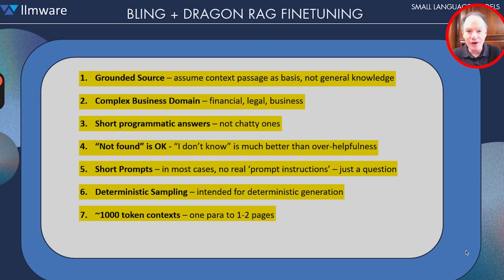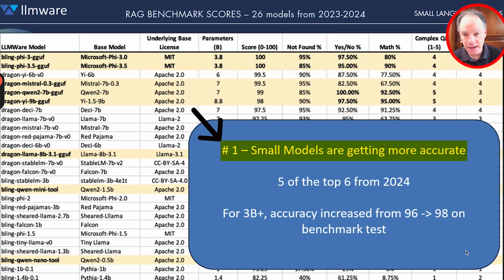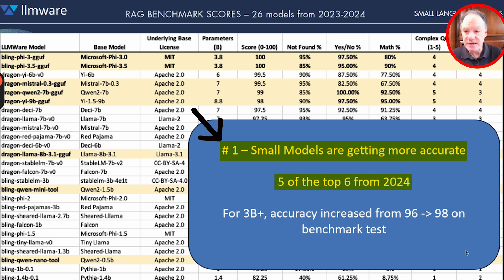Enough about the methodology — let's come back and look at the results and draw some key takeaways. First big takeaway: small models are getting more accurate. When you look across these 26 different models, you can look at their vintage, and in some cases it's almost month by month, certainly throughout 2023. But in 2024, five of the six top-performing models are in fact from 2024-vintage base models.